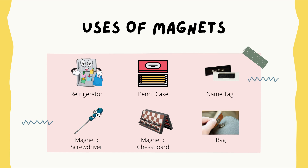The fifth one is the magnetic chessboard — the magnetic chessboard also has magnets in it. And the last one is the backpack — there is also a magnet used on our backpack. So these are the uses of magnets.